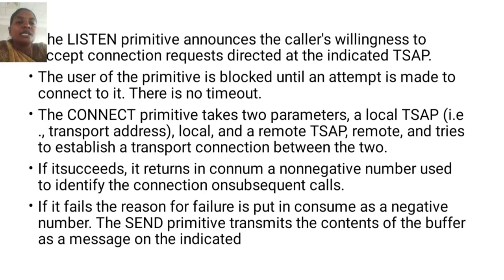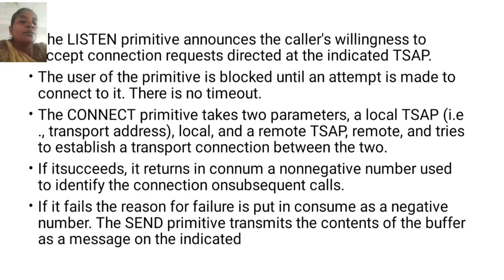The connect primitive takes two parameters: a local TSAP transport address and a remote TSAP, and tries to establish a transport connection between the two. If it succeeds, it returns a connection number — a non-negative number used to identify the connection on subsequent calls. If it fails, the reason for failure is returned as a negative number.